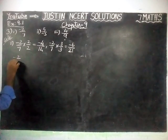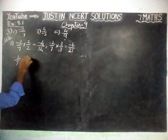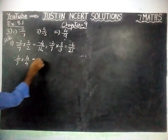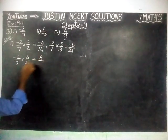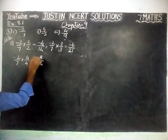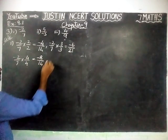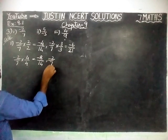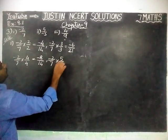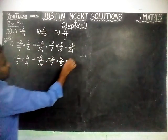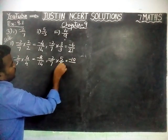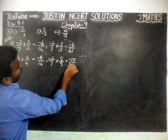Next, minus 2 by 7 into 4 by 4 is equal to: 4 2s are 8, divide by 7 4s are 14, and here minus into plus equal to minus. Next, minus 2 by 7 into 5 by 5 is equal to: 2 5s are 10, minus into plus equal to minus, divide by 7 5s are 35.